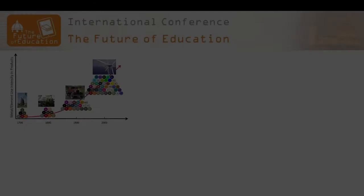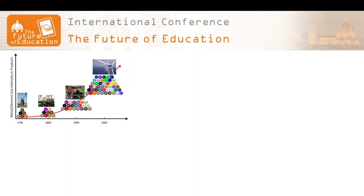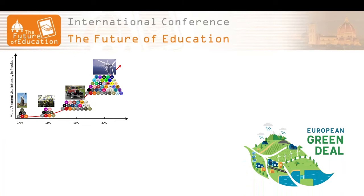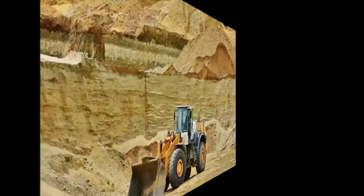Nowadays, societies are increasingly reliant on raw materials, specifically minerals and metals, due to population growth and the need for new technologies. The European Union is committed to the development and sustainable use of raw materials through the European Green Deal Action Plan, that aims to boost the efficient use of resources by moving to a clean, circular economy, restoring biodiversity, cutting pollution, fighting climate change, and encouraging citizens to work towards a greener and more sustainable Europe. Raw materials are all the natural resources that are neither food nor energy, and they are very numerous.